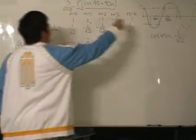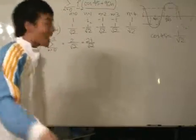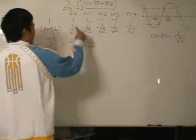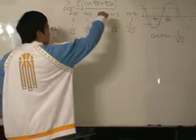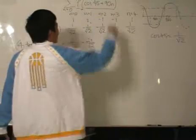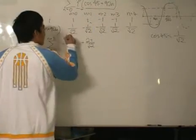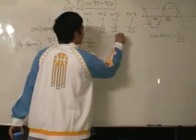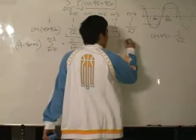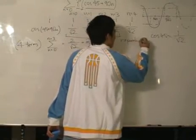The pattern repeats itself, because this term over here is the same as this term over here. So as we keep on increasing n, it will just cycle back — to this term, to this term, to this term, to this term — repeating through n equals 0 to n equals 3. That is good; it repeats itself.